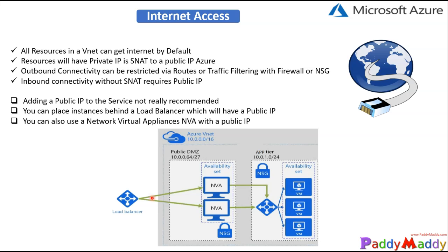That's where one layer of filtering can happen. You can also have your NSGs, and then you can send this traffic to the application gateways or another layer of network load balancer. From there, it will route to your VM. So these are the typical designs you can use to actually give internet access.